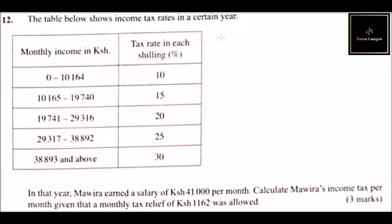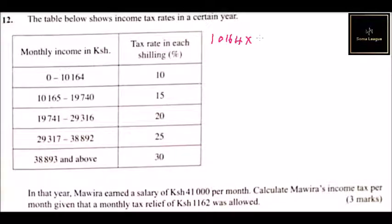This is covered in commercial arithmetic in Form Three. It is good to organize your work in a structured format. We start with the first bracket: ten thousand one hundred and sixty-four shillings taxed at ten percent, which is 0.1. This gives Mawera a tax of one thousand and sixteen shillings forty cents for the first bracket.